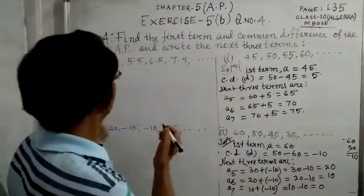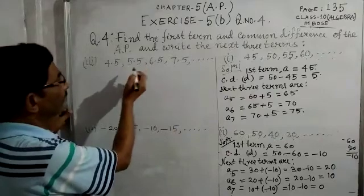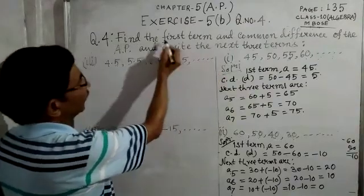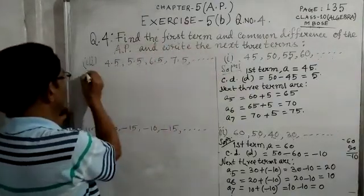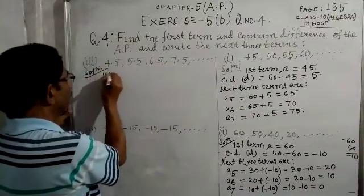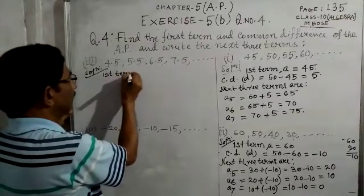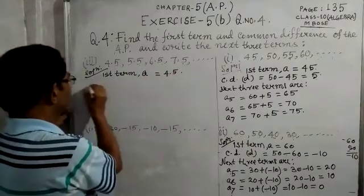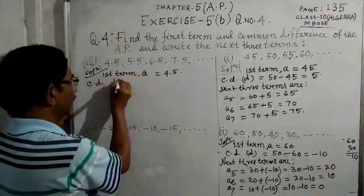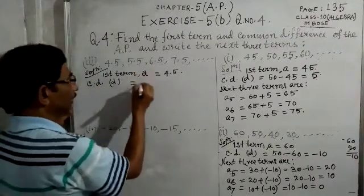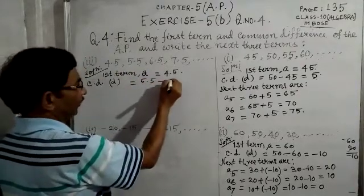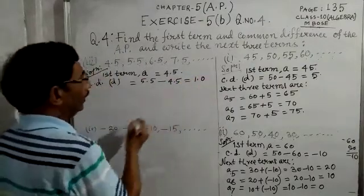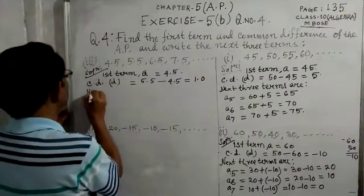Now question number 3: the AP is 4.5, 5.5, 6.5, 7.5... We have to find the first term. The first term A is equal to 4.5. The common difference D is equal to the second term minus the first term — 5.5 minus 4.5 equals 1.0. Now we will find the next three terms.